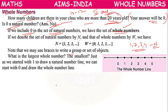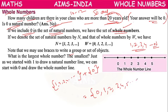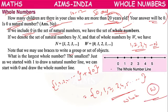Along with the natural numbers 1, 2, 3, 4, if we add 0, we get a new set starting from 0. This set is called whole numbers, denoted by the symbol W. Natural numbers are denoted by N. N equals the set of 1, 2, 3, and so on.